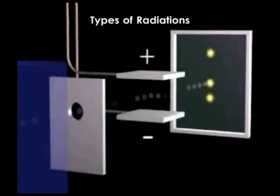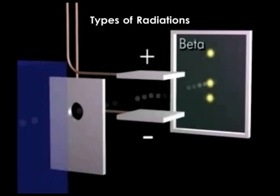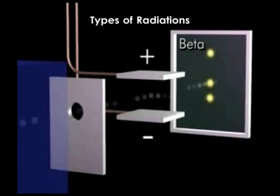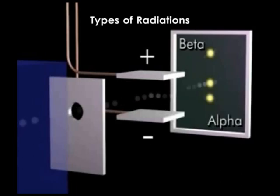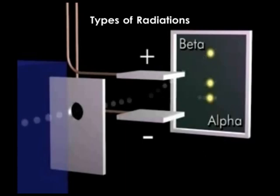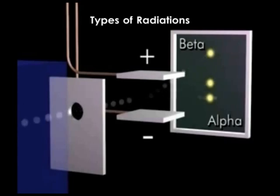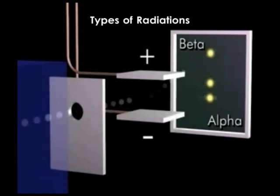One of these is deflected upwards by the electric field, indicating that it is negatively charged. These radioactive emissions are called beta rays. Note that the alpha particles are deflected less than the beta particles by the same electric field. This occurs because the alpha particles are more massive, but the amount of deflection is also determined by the relative energies of the different types of radiations. The portion of the original beam that is undeflected is due to radiations that are not charged, and these are called gamma rays.